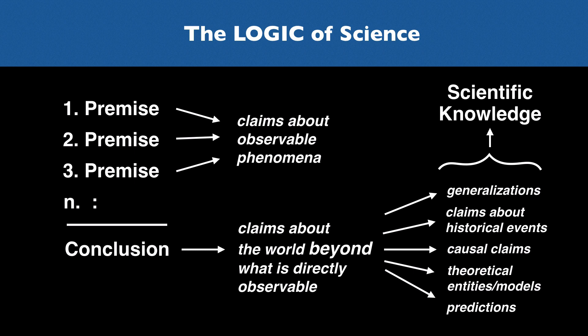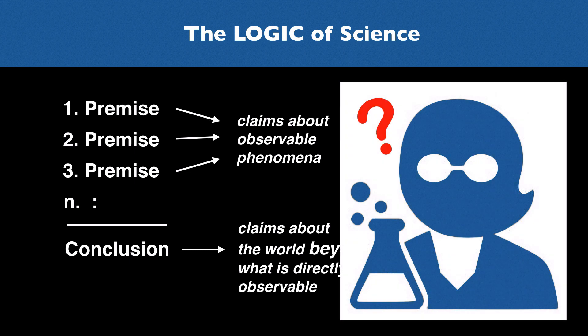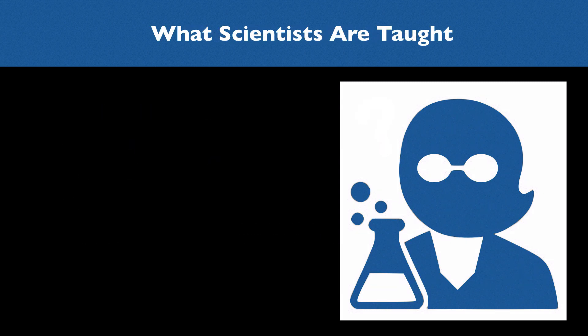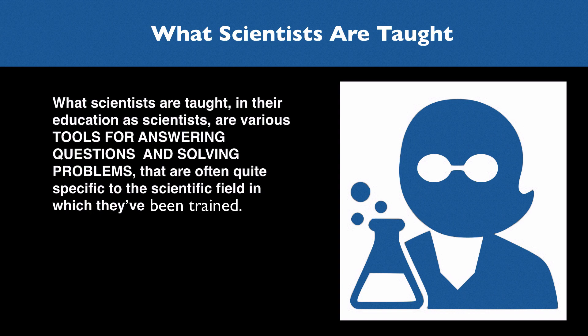So ultimately, the logic of science is the logic of arguments for various kinds of scientific knowledge. Philosophers of science have been very good at unpacking the logical structure of these kinds of arguments, and there's a whole industry devoted to questions and debates about what the criteria are for a good argument within each of these categories. But it might be surprising to learn that scientists are largely ignorant of these discussions about the logic of science when they're framed in the language of logic and argument analysis. What scientists are taught in their education as scientists are various tools for answering questions and solving problems that are often quite specific to the scientific field in which they've been trained.